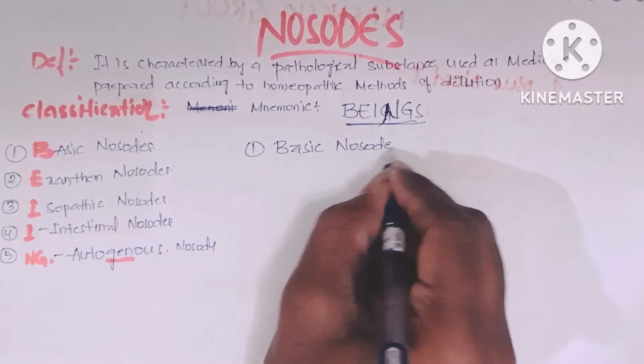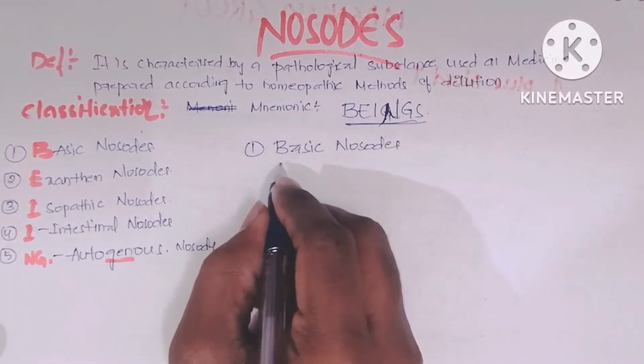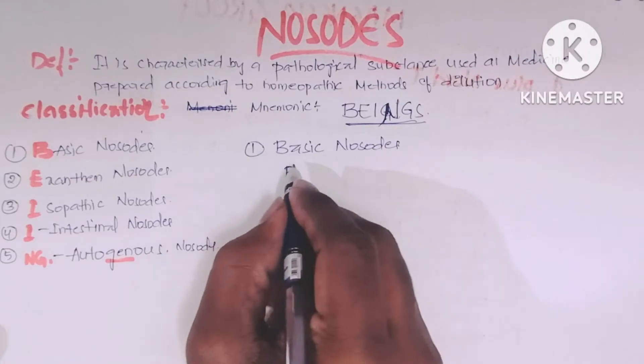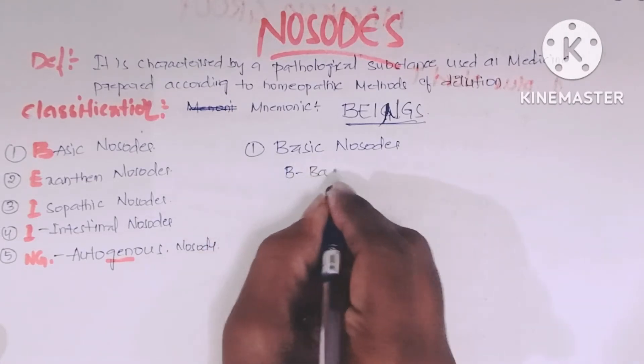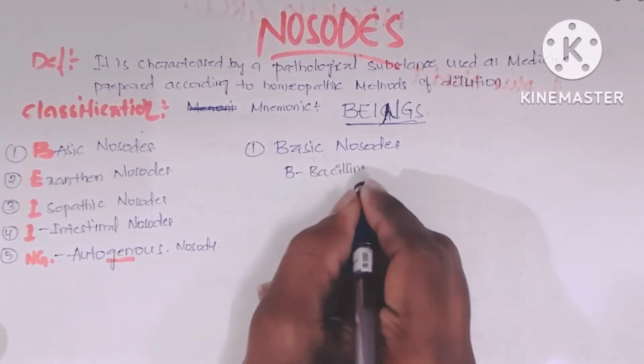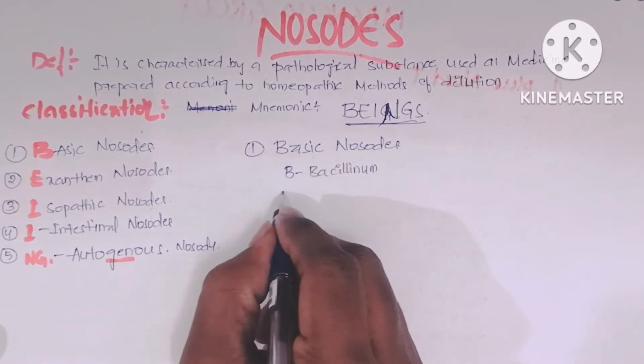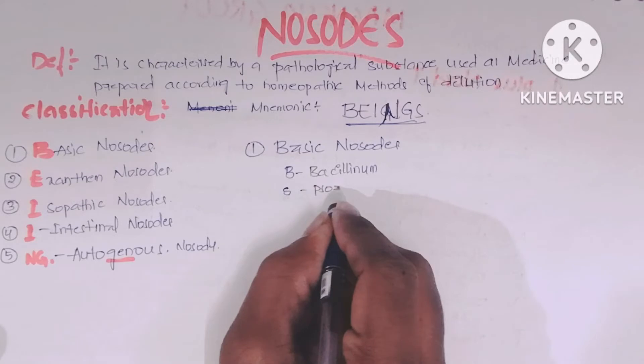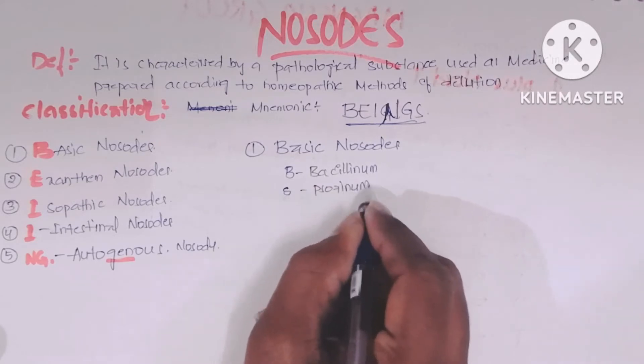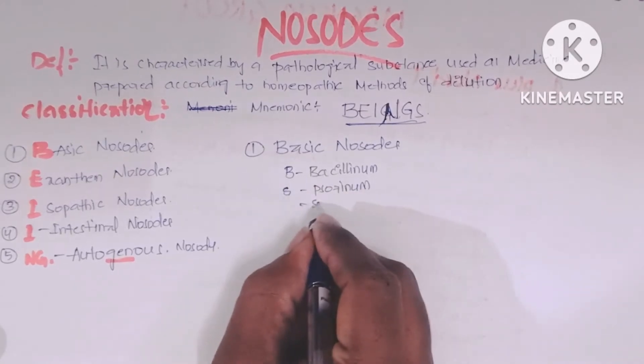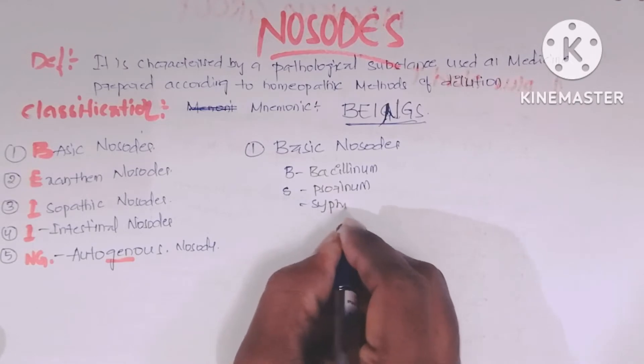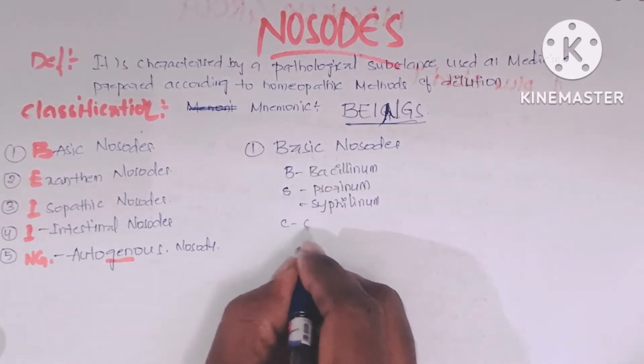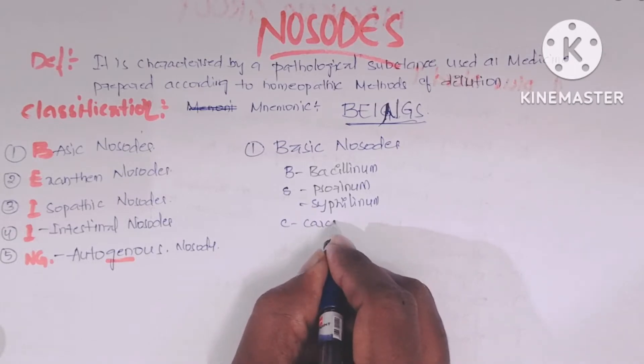What nosodes are covered in the Basic nosodes? Just remember B for Bacillinum, Basic nosodes. S for Psorinum and Syphilinum, and C for Carcinosinum.